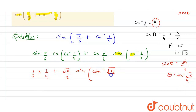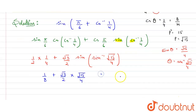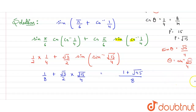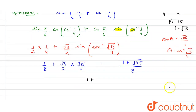We can cancel sine and sine inverse. So the expression becomes: 1/2 · 1/4 + √3/2 · √15/4, which gives 1/8 + √45/8. Taking LCM as 8, and simplifying √45 = 3√5, we get (1 + 3√5) upon 8.